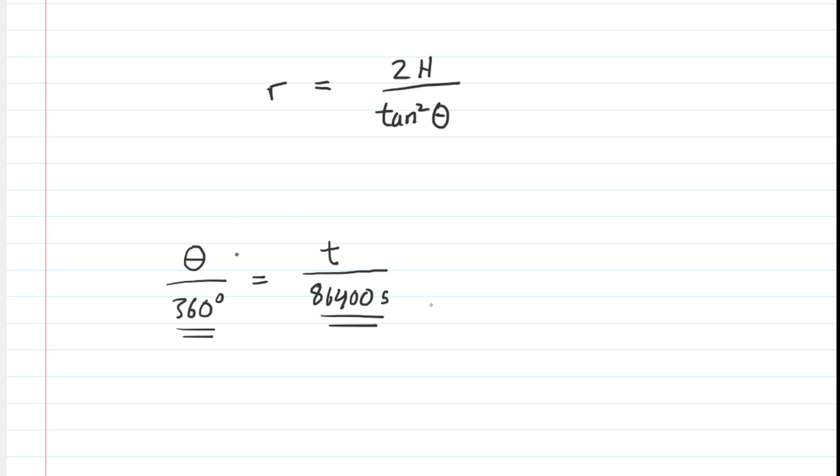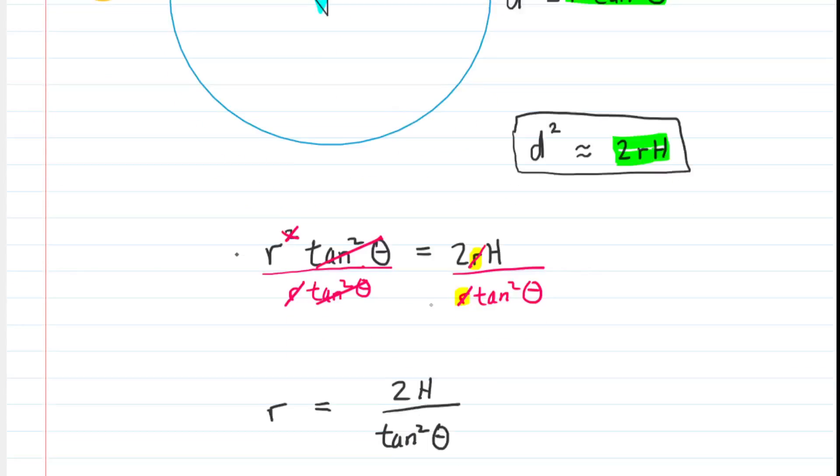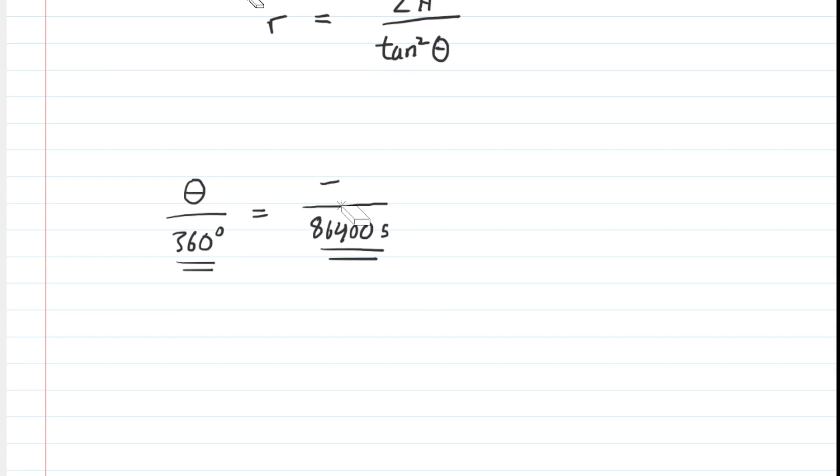Now, theta was swept out in a time of 11.1 seconds, I think it was. Indeed it was. So we're going to actually substitute in 11.1 seconds in for the time. And now we just do a little cross-multiplication. If we multiply 360 by 11.1, we're going to get 3996. We then have 86,400 multiplied by theta is equal to that 3996. And then divide both sides of the equation by 86,400. And you would see that theta, very small angle, is going to be around 0.04625 degrees. So that's the angle that the sun sweeps out in 11.1 seconds.